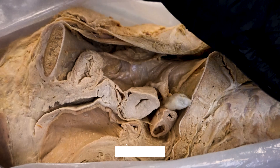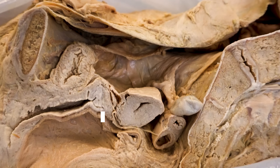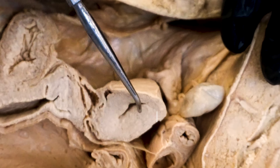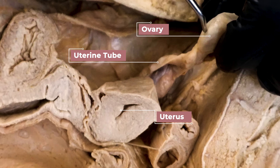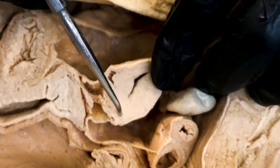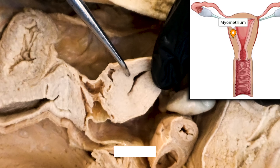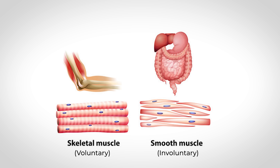Looking at the cadaver dissection, we have a mid-sagittal cut through the female pelvis — a cut through the midline — showing the vaginal canal, the uterus, the uterine tube, and the ovary, which is about the size of an almond. The largest portion of the uterus is referred to as the myometrium. 'Myo' means muscle, and this is specifically made of smooth muscle, which is under involuntary control, unlike skeletal muscle. The uterus is actually the largest smooth muscle mass in the human body.